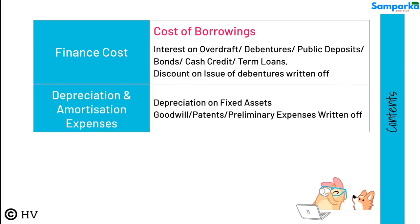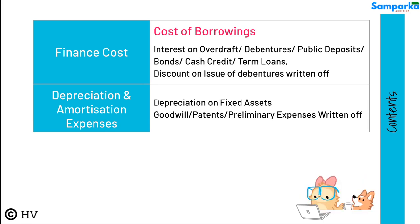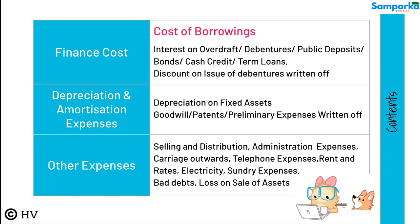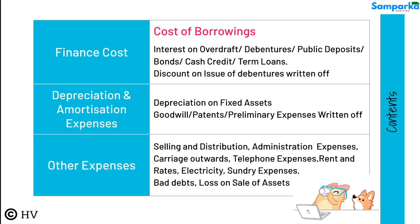Depreciation and Amortization Expenses includes depreciation on fixed assets. Goodwill, patents, and preliminary expenses written off are also shown under this head. Other Expenses — expenses that do not find a place in the above-mentioned heads are brought under Other Expenses, including selling and distribution, administration expenses, carriage outwards, telephone expenses, rent and rates, electricity, sundry expenses, and bad debts.